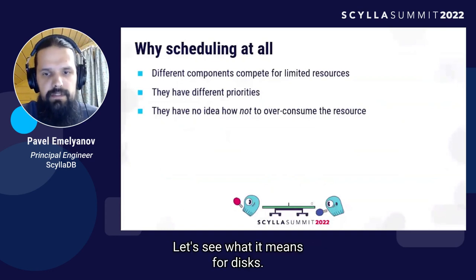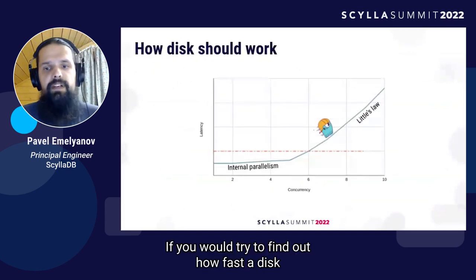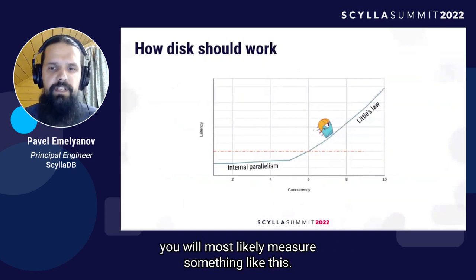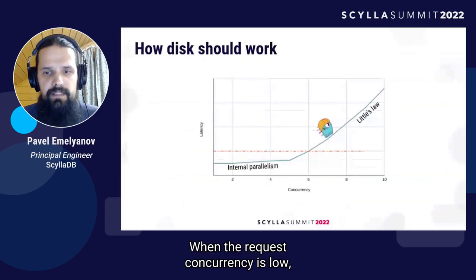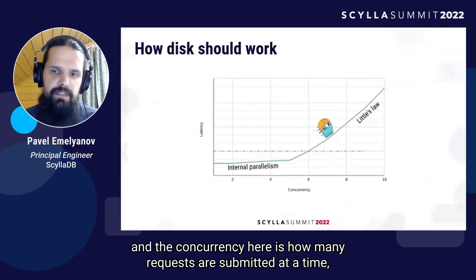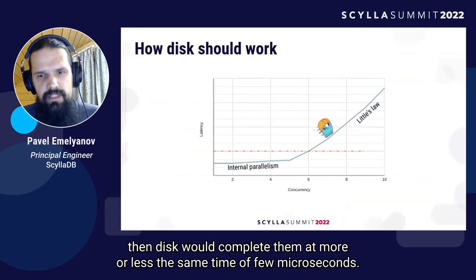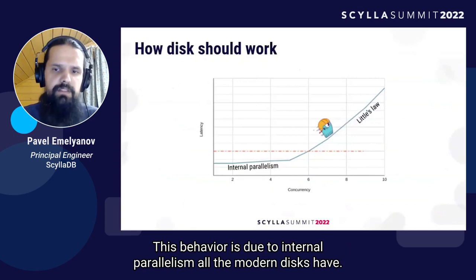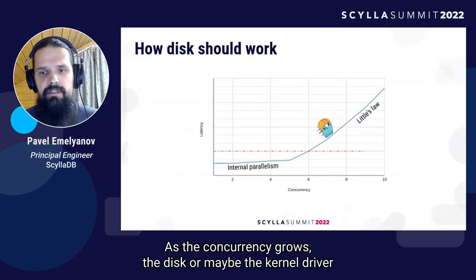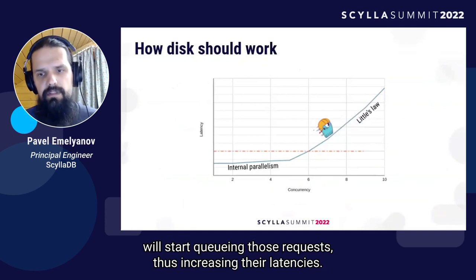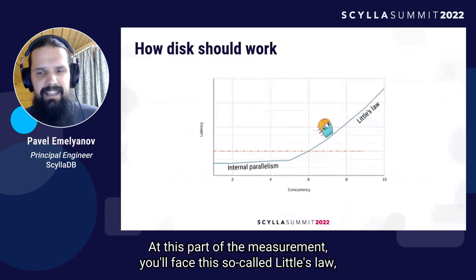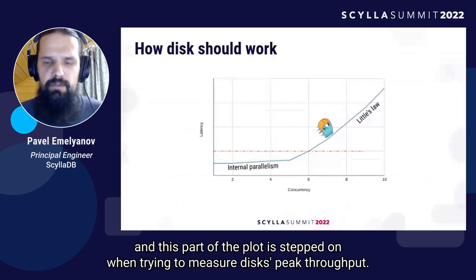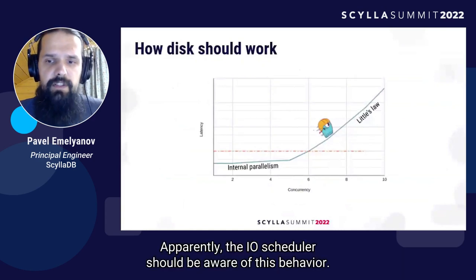Let's see what it means for disks. If you try to find out how fast a disk can serve one, four, or more requests running simultaneously, you will most likely measure something like this. When request concurrency is low — how many requests are submitted at a time — the disk completes them at more or less the same time, a few microseconds. This behavior is due to the internal parallelism all modern disks have. As concurrency grows, the disk or maybe the kernel driver will start queuing those requests, increasing their latencies. At this part of the measurement, you face the so-called Little's Law. And this part of the plot is targeted when trying to measure disk's peak throughput. Apparently, the IO scheduler should be aware of this behavior.